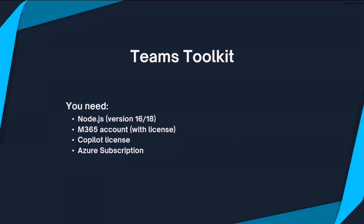For the Teams Toolkit, you need a couple of things. First, you need Node.js version 18. You also need a Microsoft 365 account with the appropriate license, and a Copilot for Microsoft 365 license to test and use the agents. For declarative agents you don't need an extra subscription, but for custom agents with your own large language model, you will need an Azure subscription to use Azure OpenAI.